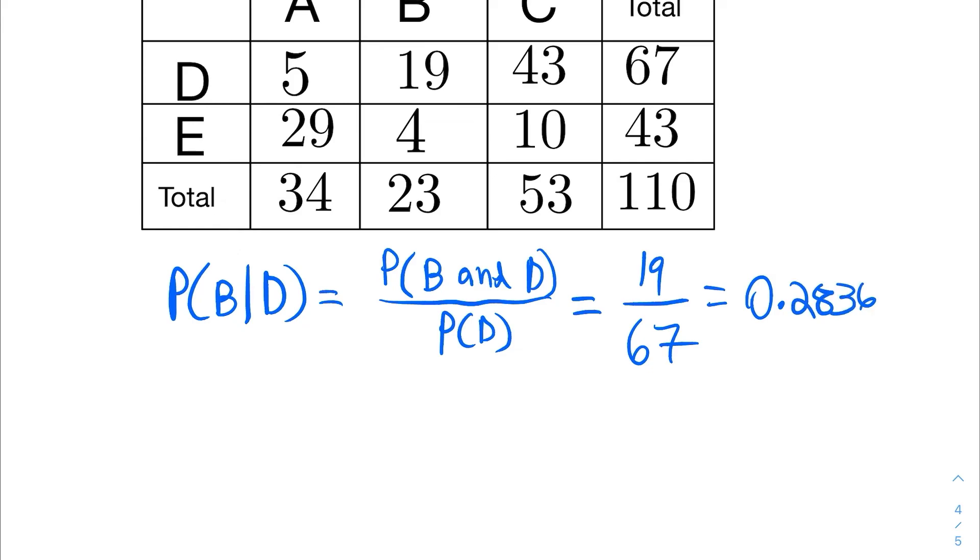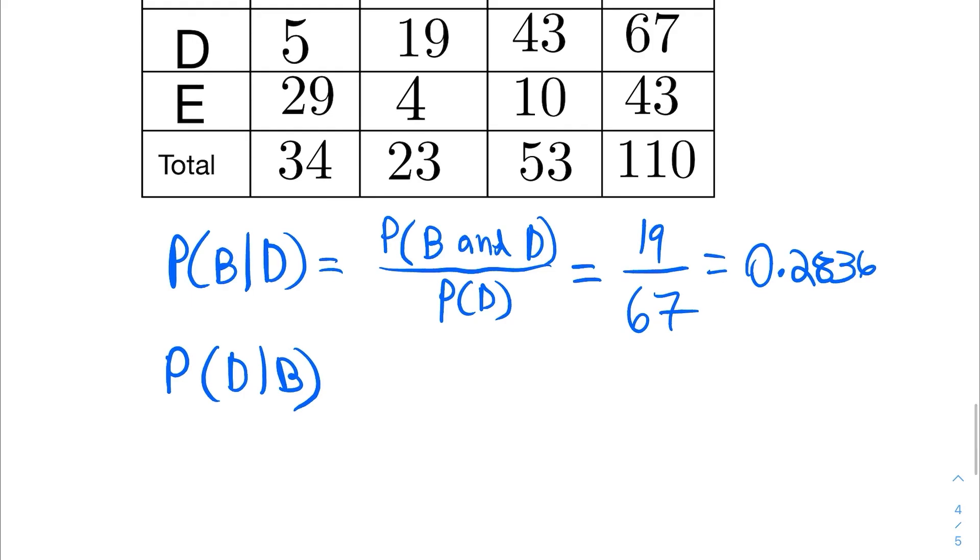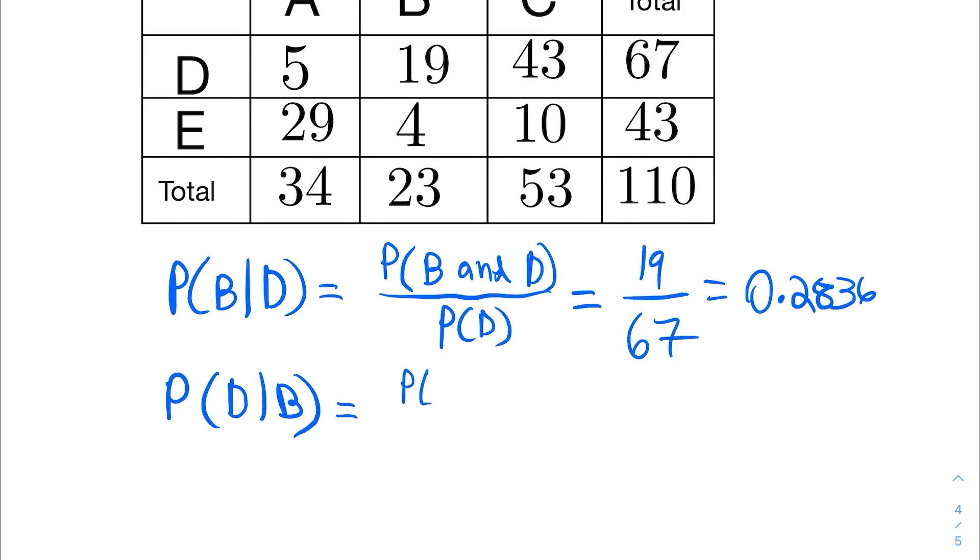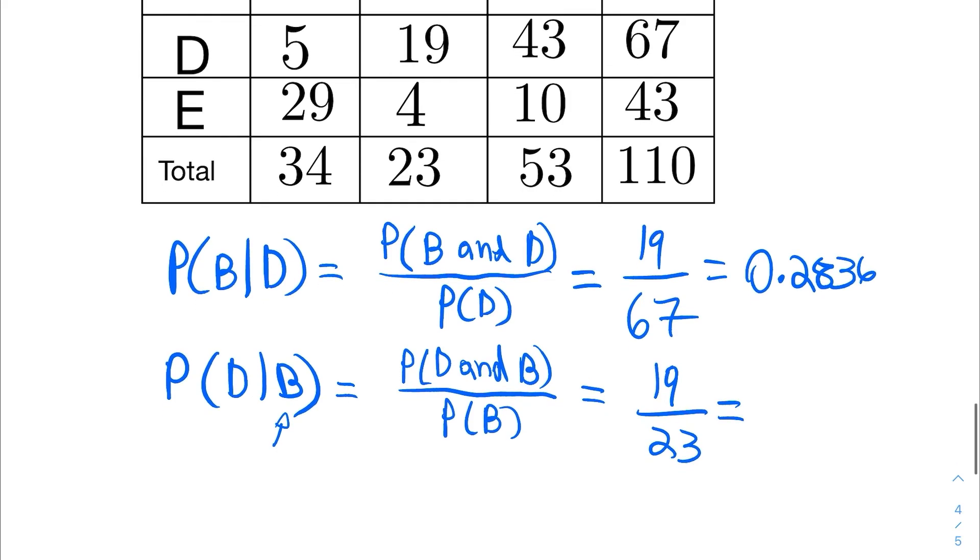And if we were doing the inverted version of that, the probability of D given B, it's the same thing. I look for D and B, which happens to be the same exact thing as B and D, but then in this case I'm dividing by the probability of B because it's conditioned on B instead. So the top is the same, 19, still the intersection of row D and column B, so still 19, but now I'm looking for the sum of column B, which is 23. So this is equal to approximately 83 percent, 0.8261. Okay, so that's how you find conditional probabilities.